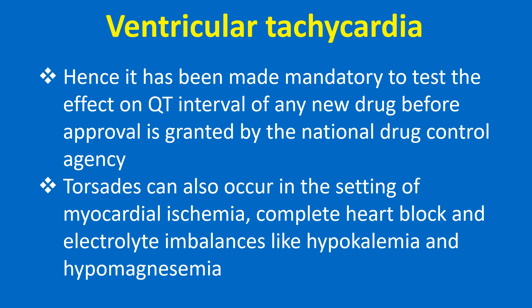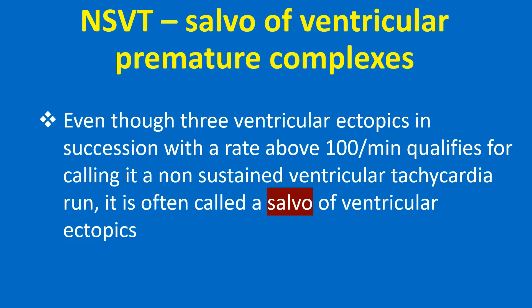Torsades de pointes can also occur in the setting of myocardial ischemia, complete heart block, and electrolyte imbalances like hypokalemia and hypomagnesemia. Even though three ventricular ectopics in succession with a rate above 100 per minute qualifies for calling it a non-sustained ventricular tachycardia run, it is often called a salvo of ventricular ectopics.